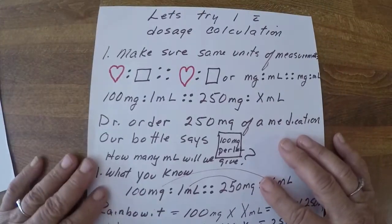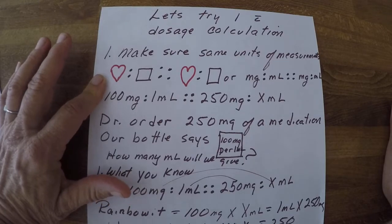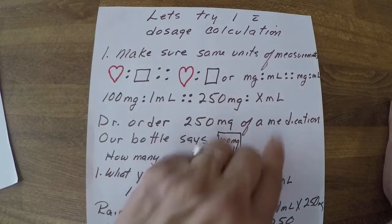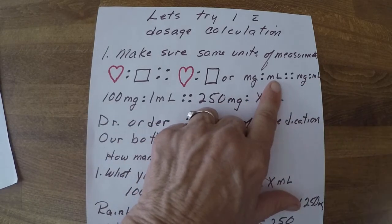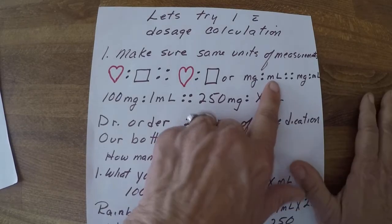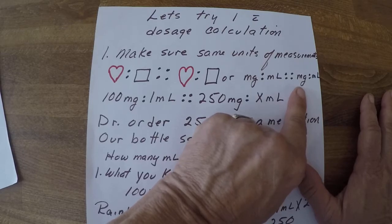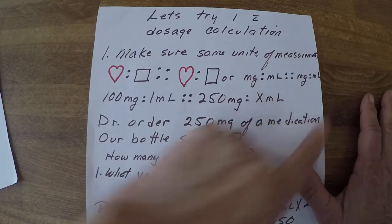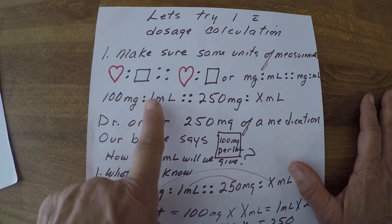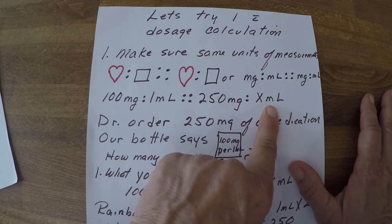Now let's do one with our drug calculations. The first thing you want to make sure when using ratios is that you compare the same units — hearts to squares, hearts to squares, or milligrams to milliliters, milligrams to milliliters. It must be the same unit measurement. If it isn't, you can't use the ratio. You'd have to convert — for example, change grams to milligrams first. So here: 100 milligrams is to 1 ml as 250 milligrams is to x ml.